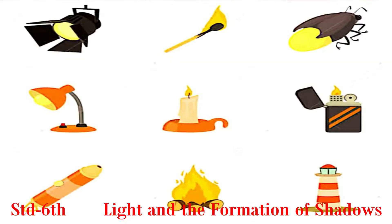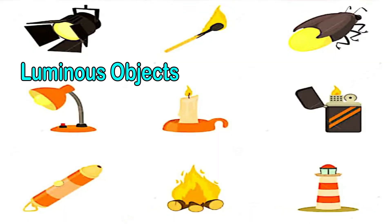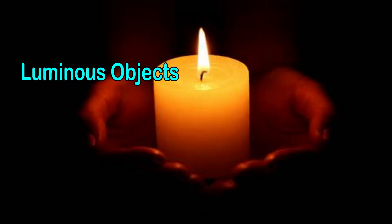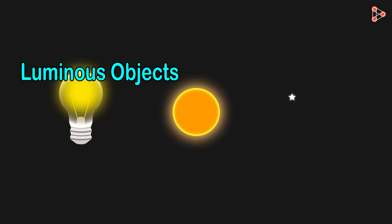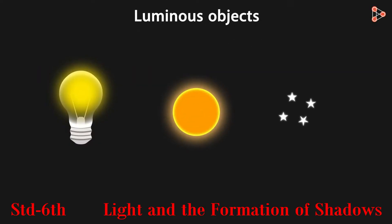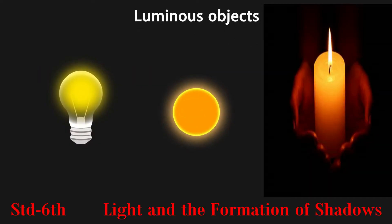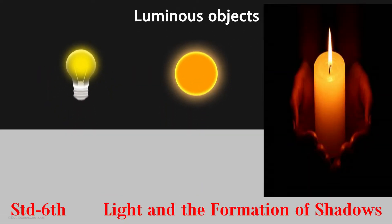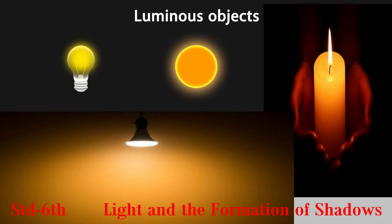Luminous Objects: Objects that produce their own light are known as luminous objects. Examples of luminous objects are electric bulb, candle, etc.